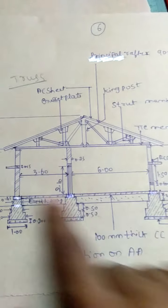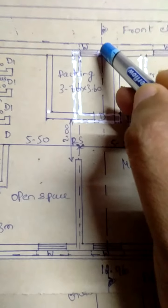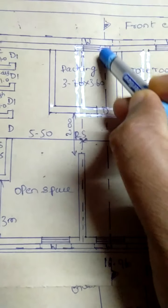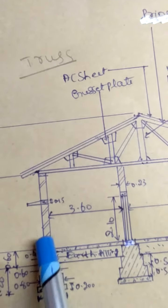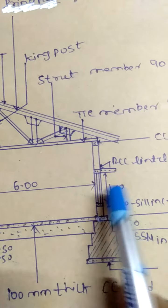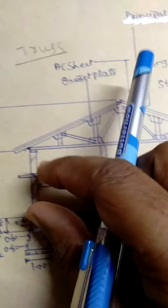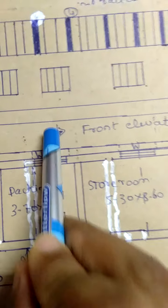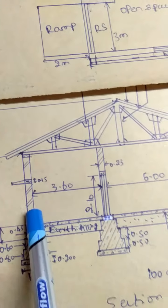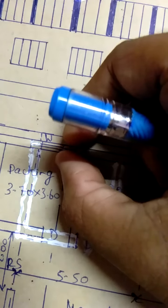Now let us see the section clearly. This wall portion, this window, and the chajja portion is cut here. You can see this is the wall that has been cut — its thickness is shown, the chajja is shown. Actually the window should also be shown here; by mistake I ejected the window. The same thing we have to show here also, because the section line is passing through both the chajja and the window, so we must show the window as well.